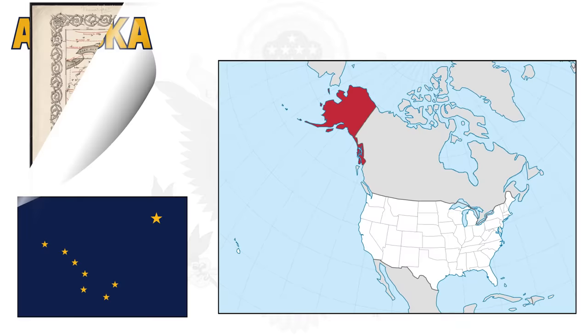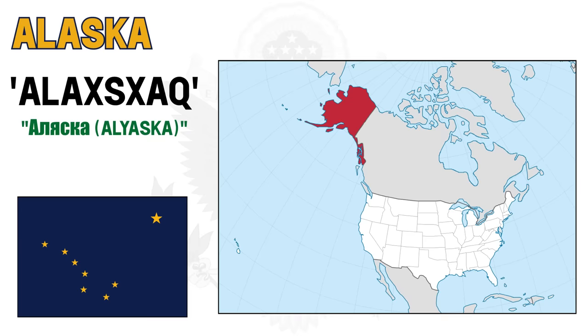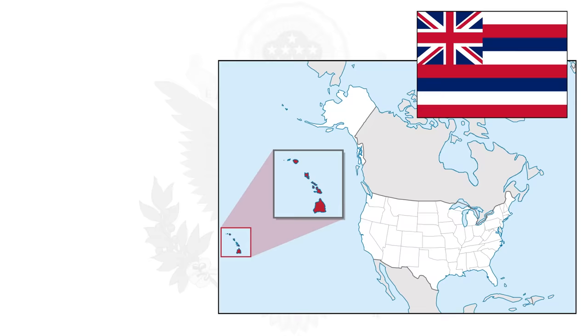Alaska was first colonized by the Russian Empire, who then sold it to the United States. This native word — Aliaska — was the name the empire baptized their colony with in the year 1666.